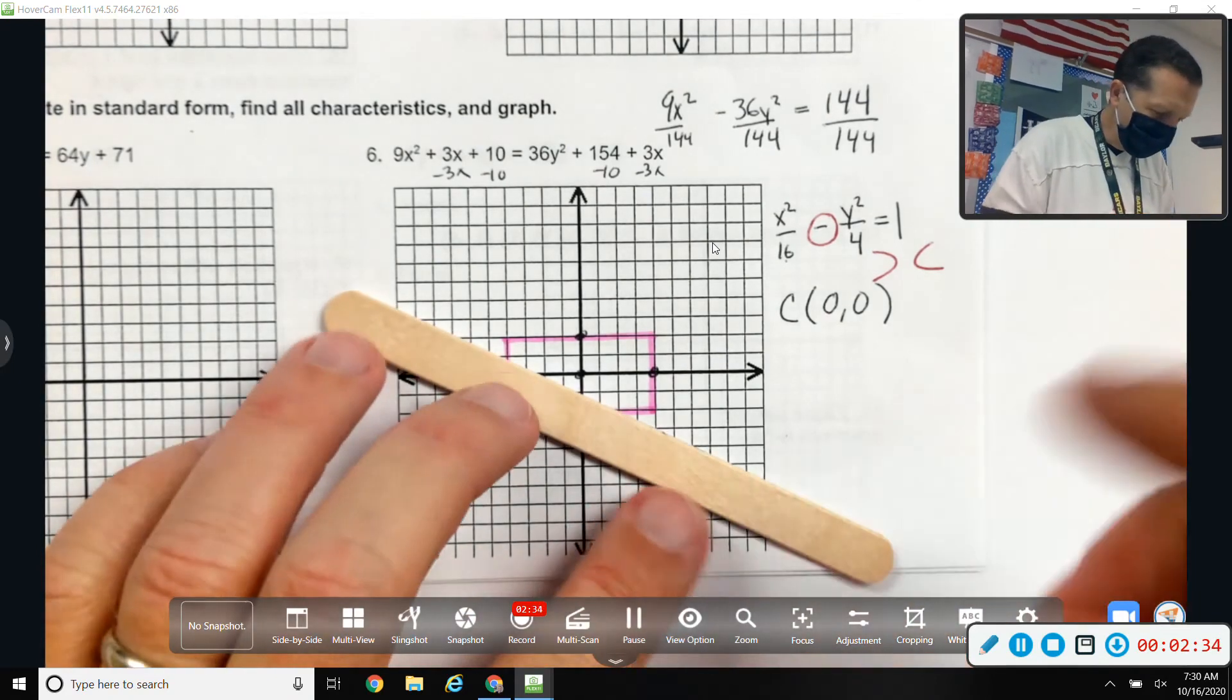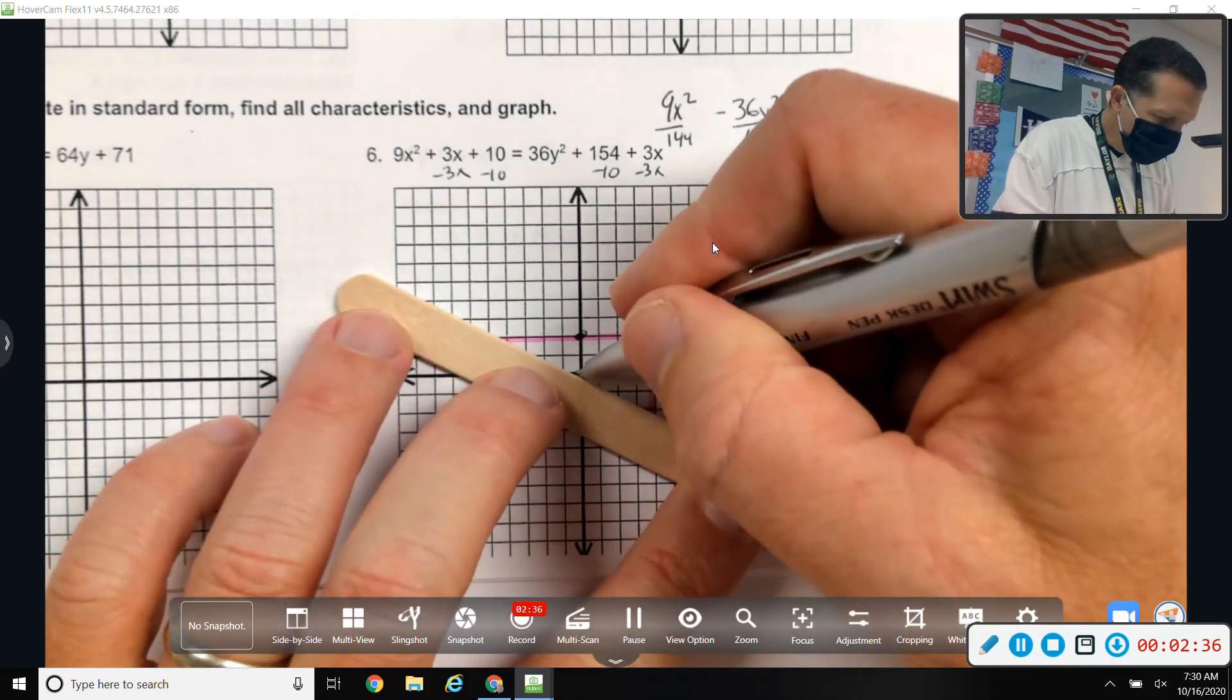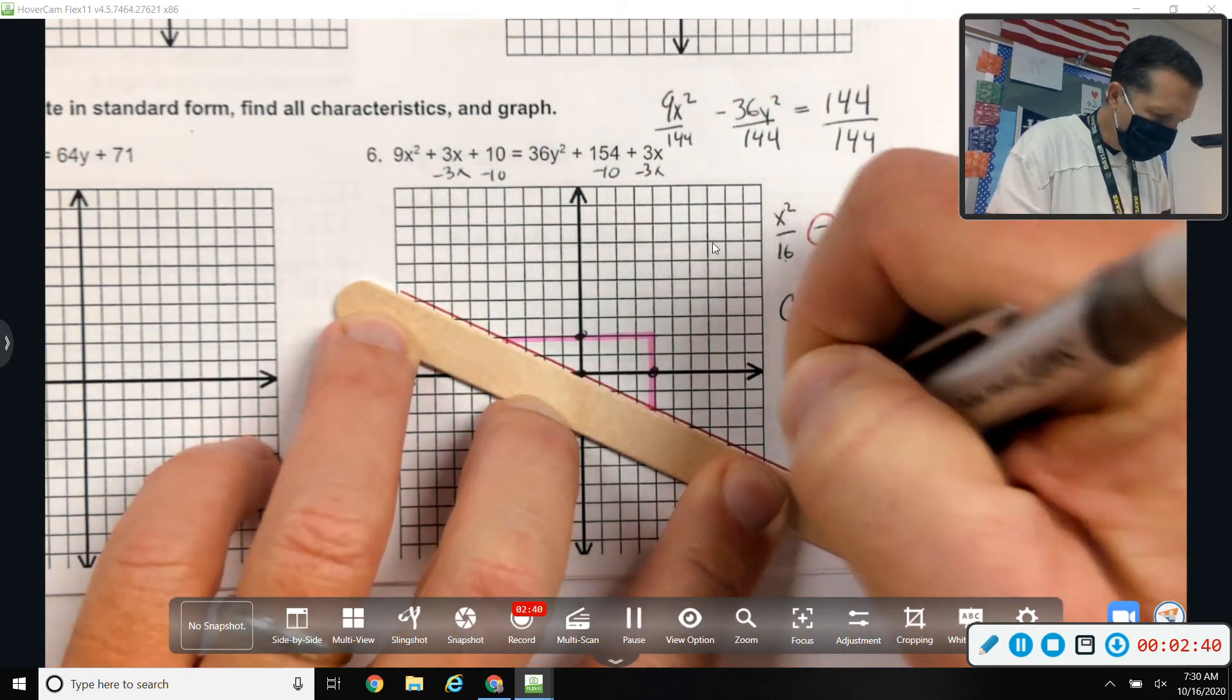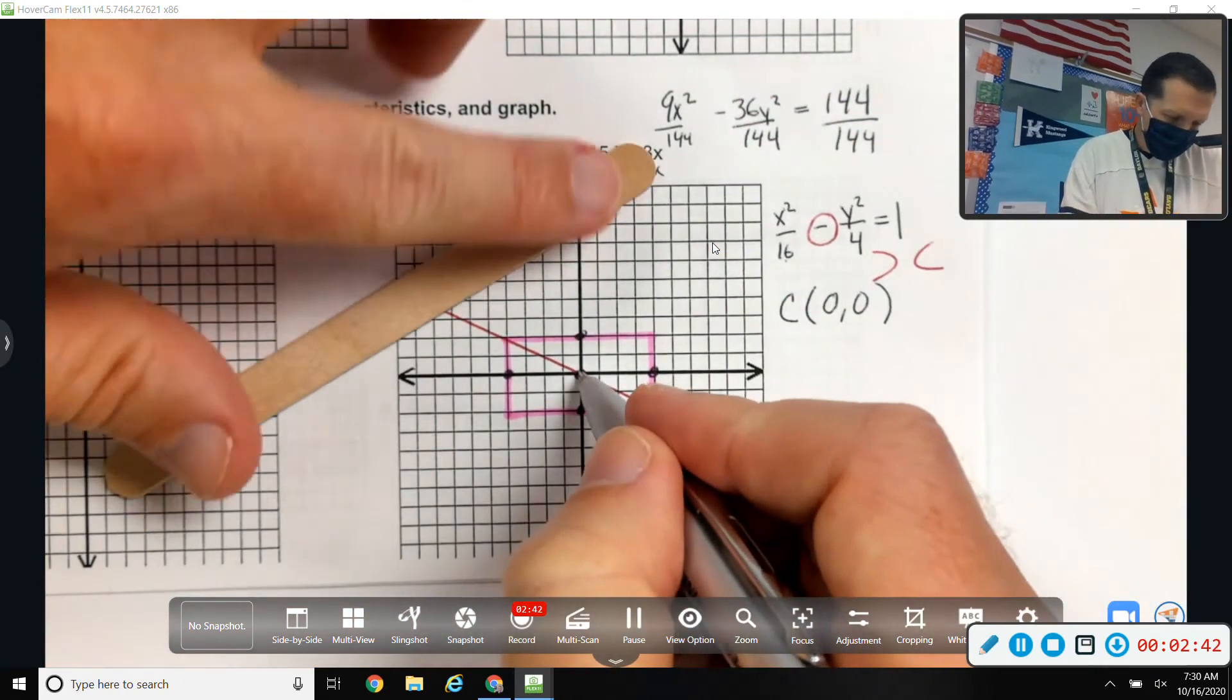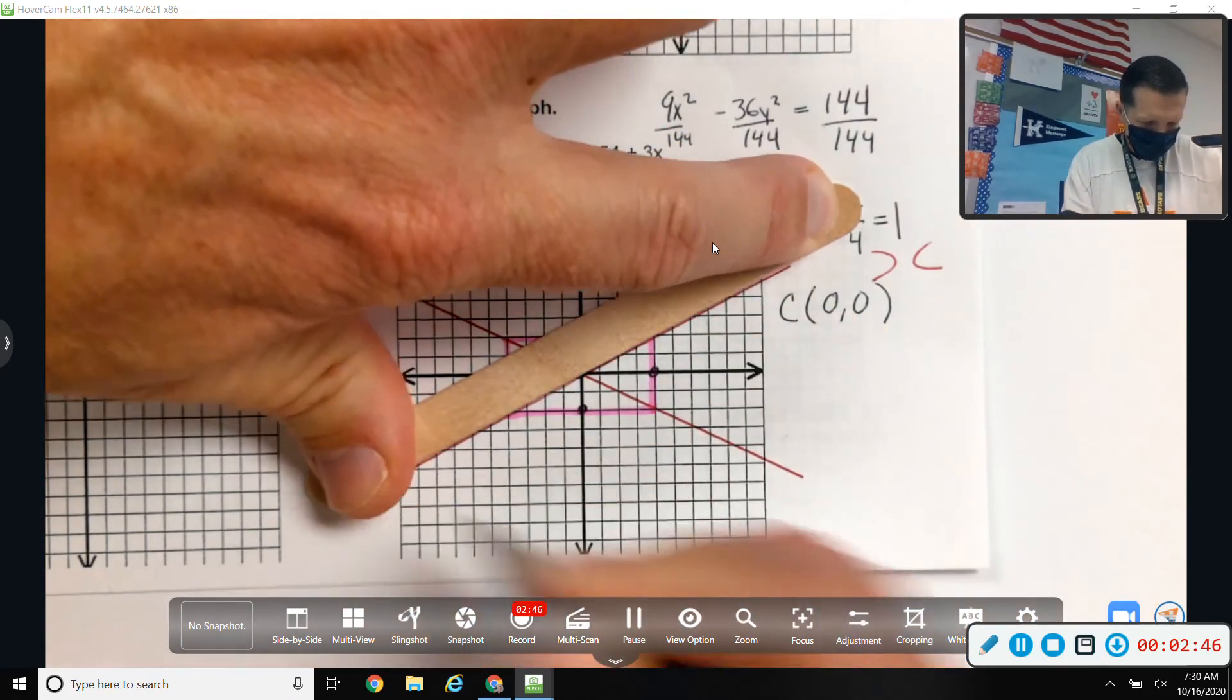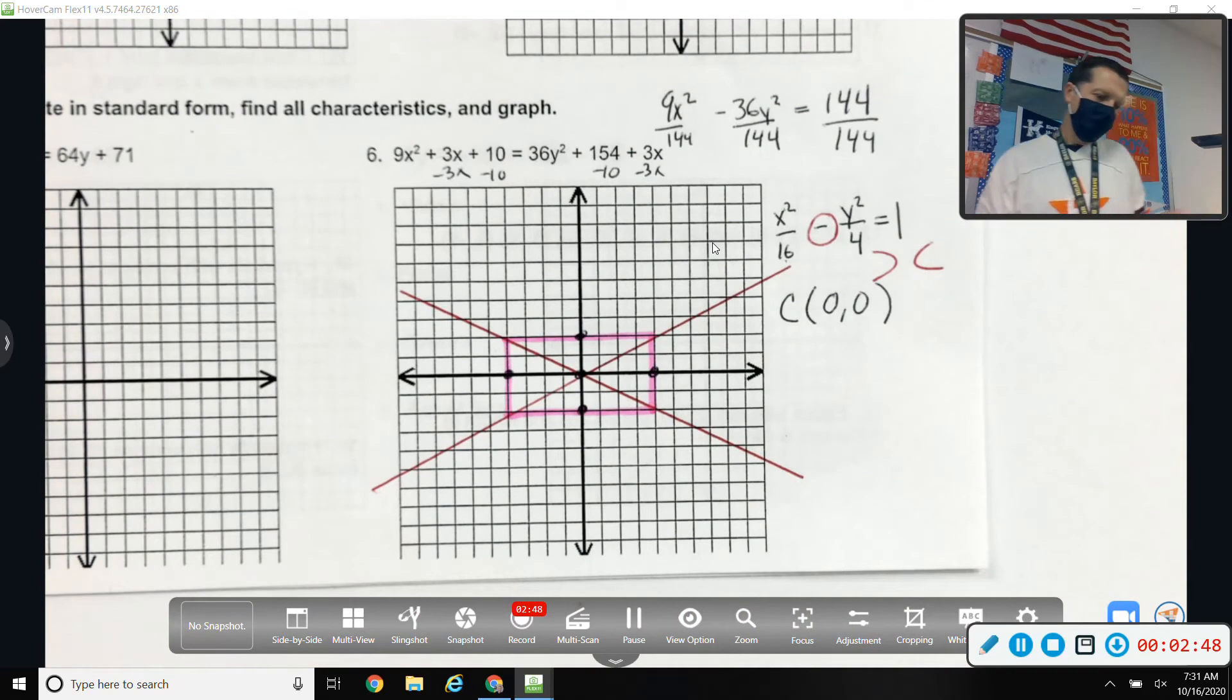Asymptotes with a straight edge like your ID or ruler or whatever. Nice, crisp grass. There's my asymptotes. And now I'm ready to sketch in the hyperbola.